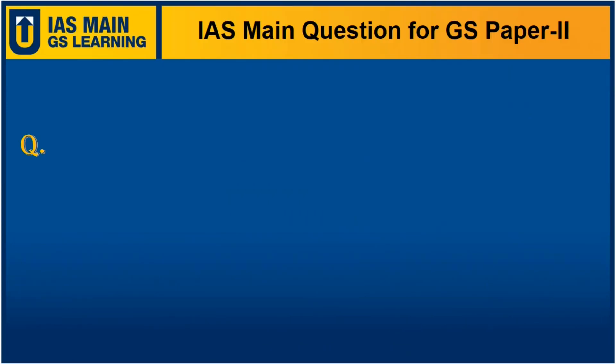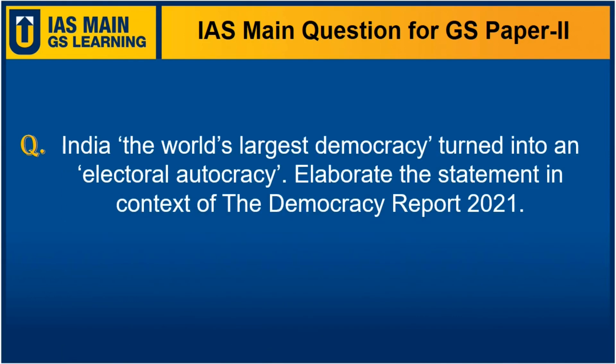Friends, today we will discuss a probable question for Indian polity and governance for IES Mains G.S. Paper 2. The question is: India, the world's largest democracy, turned into an electoral autocracy. Elaborate the statement in context of the Democracy Report 2021.